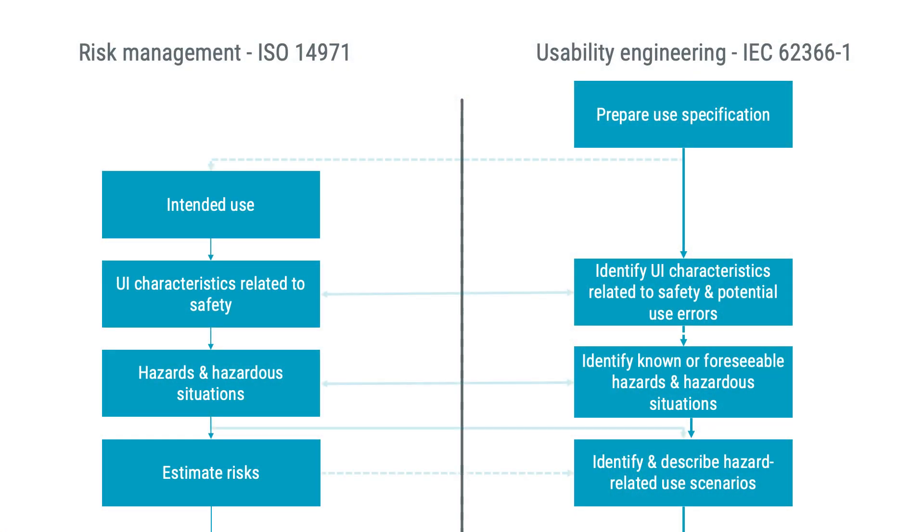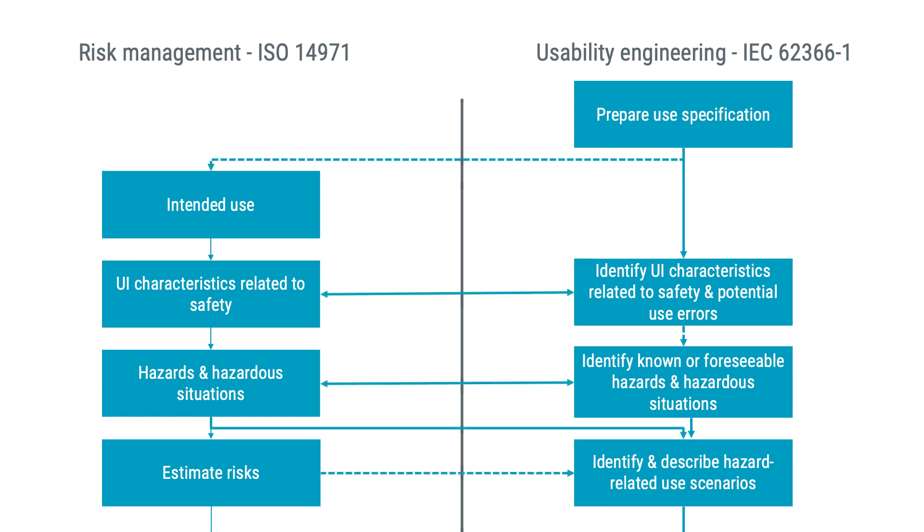If you take a look at the 62366-1 standard, there is even a flow chart showing how the usability engineering process is connected to the risk management process in one single picture. And as you can see here, usability engineering and risk management should be highly integrated. This is important to understand and remember when working with usability engineering. Your job as a usability engineer is to ensure that the device will be safe to use and has as low a risk as possible when it comes to the user interface.